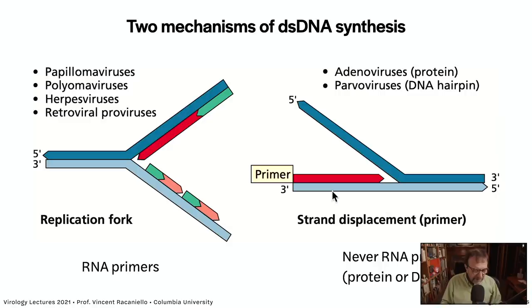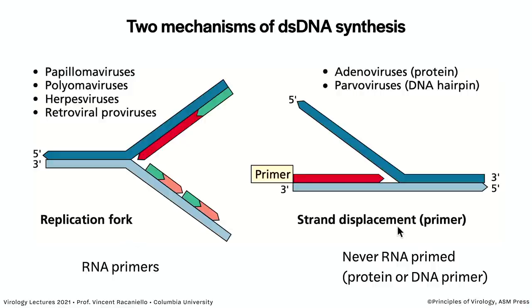There are two broad mechanisms of DNA synthesis replication: replication fork and strand displacement. The replication fork involves DNA synthesis on both strands — the fork moves from an origin and grows bigger. Papillomaviruses, polyomaviruses, herpes, and retroviral proviruses use this mechanism. Strand displacement is different — the polymerase begins at one end and displaces the top strand as it makes product.